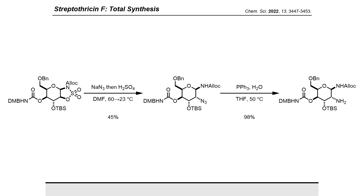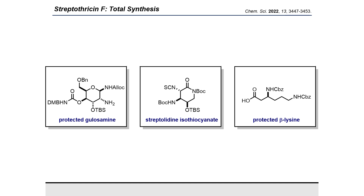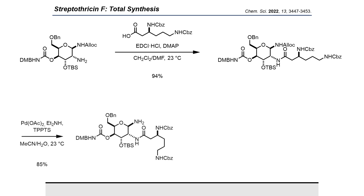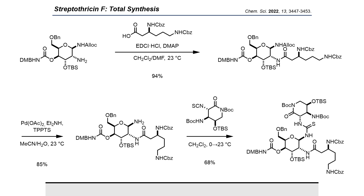Before we get into the endgame chemistry, I want to remind you of our three fragments: the protected gulosamine, the streptolidine isothiocyanate, and the protected beta-lysine. Our convergent endgame begins with an EDCI coupling of our protected gulosamine and our protected beta-lysine. Subsequent alloc deprotection of the resulting lysylgulosamine through a mild palladium-catalyzed allyl transfer protocol liberates our anomeric amine for coupling to the streptolidine isothiocyanate while avoiding anomerization. This free amine is then coupled to the streptolidine isothiocyanate in a reagent-free manner to give our thiourea intermediate, which comes in at a whopping 1472 daltons and a total of 108 protons.